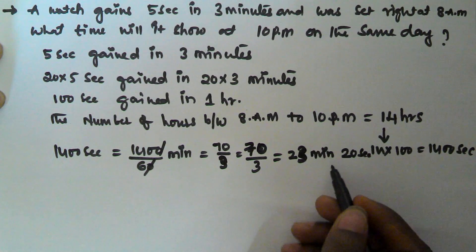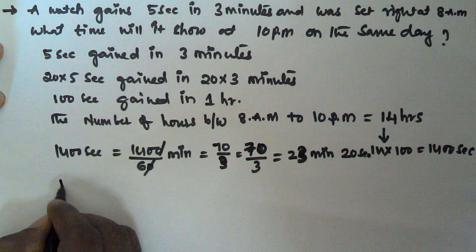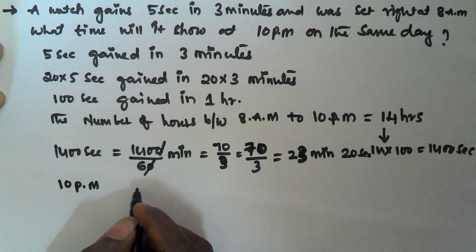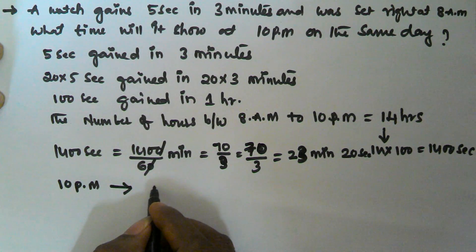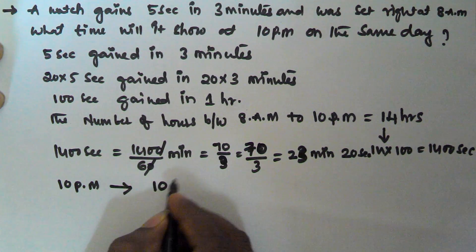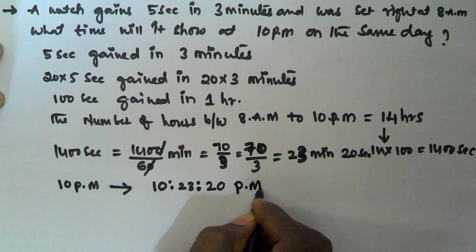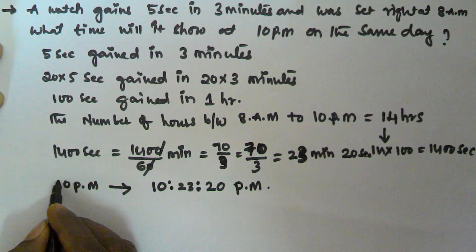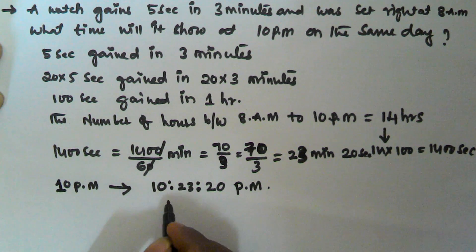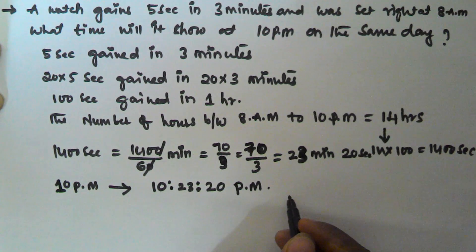This much time is gained from 8 am to 10 pm. So when the correct time is 10 pm, the watch will show 10 hours 23 minutes 20 seconds pm. I hope you got this one. Thank you very much for watching this video, and please subscribe to my channel.